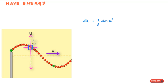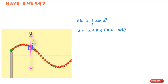The transverse velocity u is given by: u = ω·A·sin(kx − ωt), which is found by differentiating y with respect to t while keeping x constant, as learned in the earlier lesson. If the linear density (mass per unit length) of the string is μ, then μ = dm/dx.